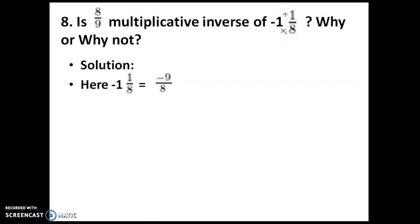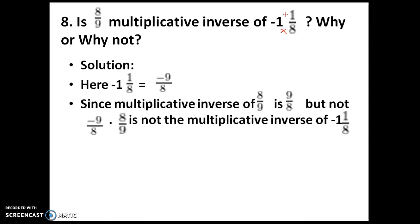We have to check whether minus 9/8 is the multiplicative inverse of 8/9. The multiplicative inverse means when you multiply a number with another number, it should give 1. But if you multiply 8/9 by minus 9/8, you will not get 1. So the actual multiplicative inverse is 9/8, not minus 9/8. Therefore, minus 9/8 is not the multiplicative inverse of 8/9.